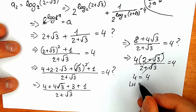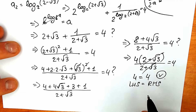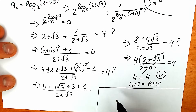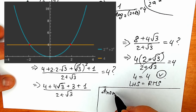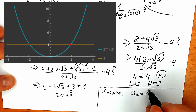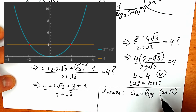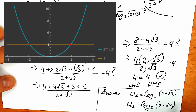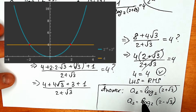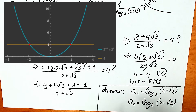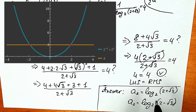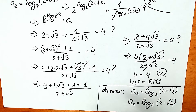Our root is absolutely correct, and you can also verify the second root — the answer will be the same. Our final two solutions are: a₁ = log base 2 of (2 + √3) and a₂ = log base 2 of (2 - √3). These are both real number roots. Thank you everyone for your time, see you in the next videos.